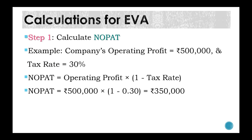To calculate NOPAT: if the company's operating profit is ₹5 lakh and the tax rate is 30%, then NOPAT = Operating Profit × (1 − Tax Rate) = ₹5,00,000 × (1 − 0.30) = ₹3,50,000. So ₹3,50,000 is the net operating profit after payment of taxes.